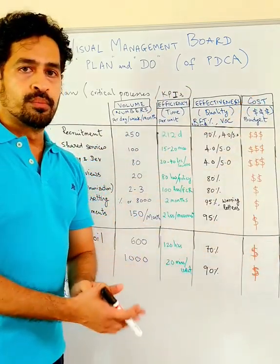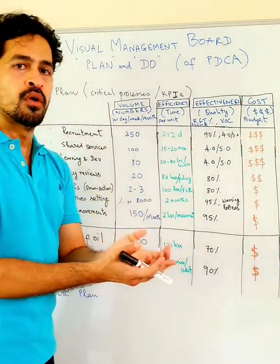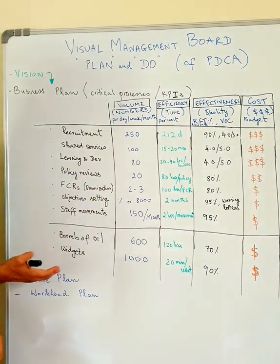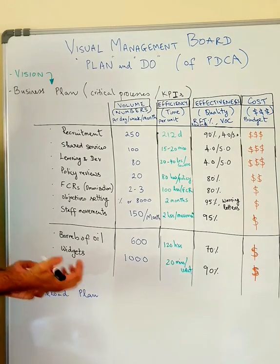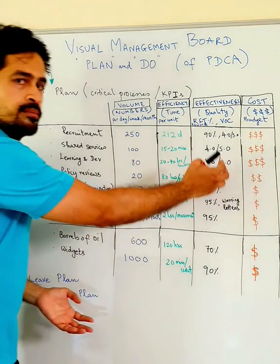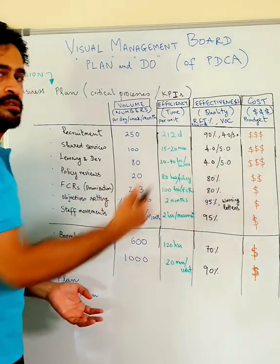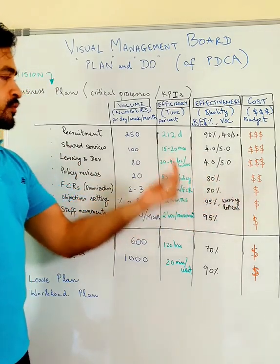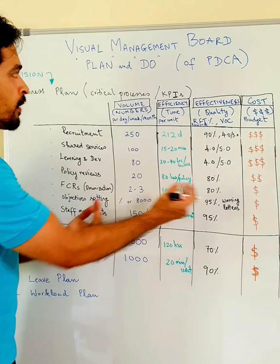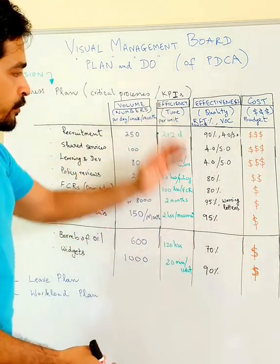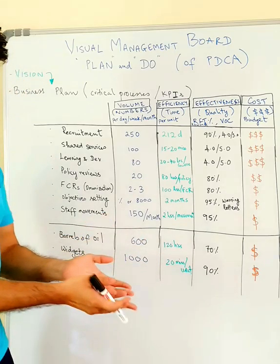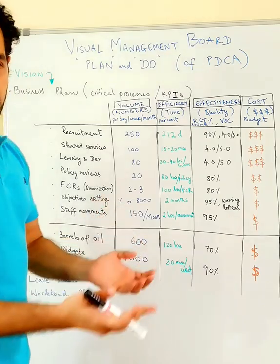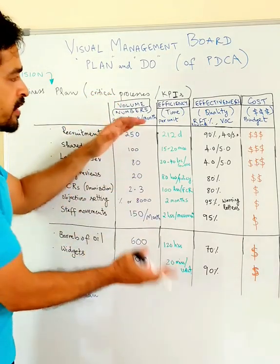So these four — volume, efficiency, effectiveness, and cost — are the major components of the business plan and the basic building blocks of a visual management board. We can also have a leave plan and workload plan. We have a plan and we track the actuals — that's your plan versus do. These can also be interpreted in terms of graphs, pivot tables, pivot graphs — anything can be done if you have the basic building blocks.